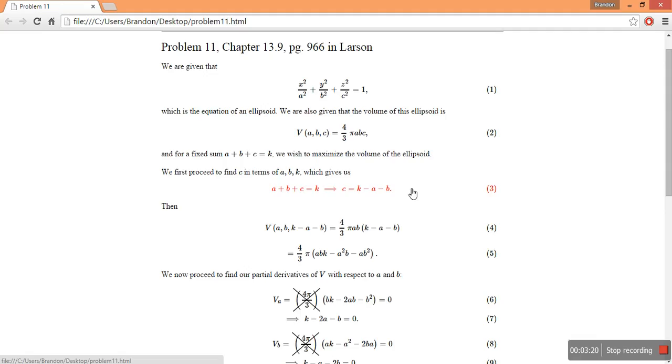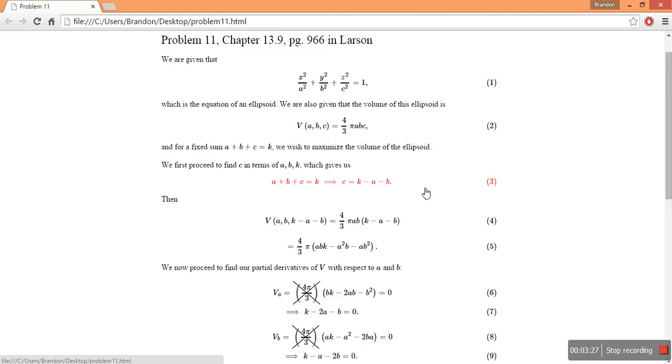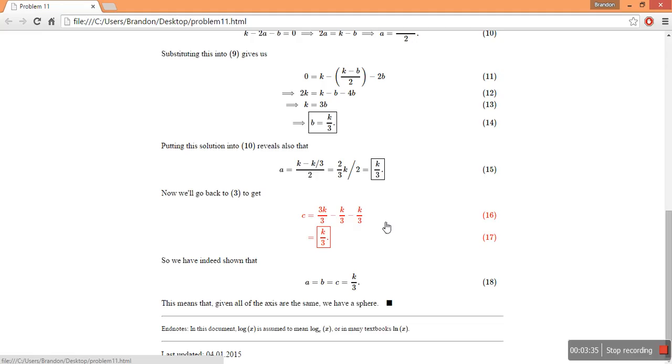So we can substitute what we know for a and b into this equation. And we find down here that I found in 16 and 17 that c is also equal to k on 3. It's kind of interesting the way this problem worked out.